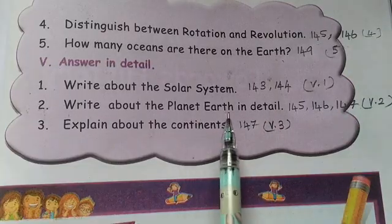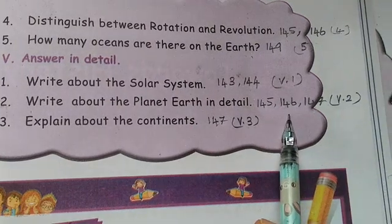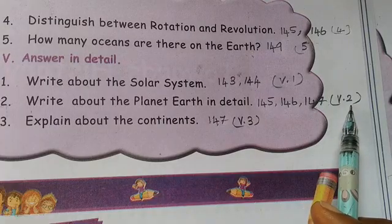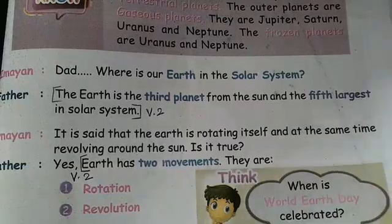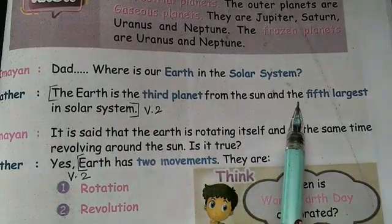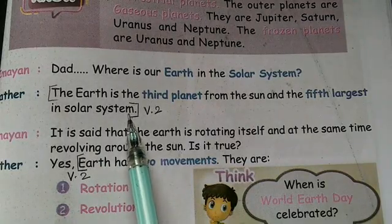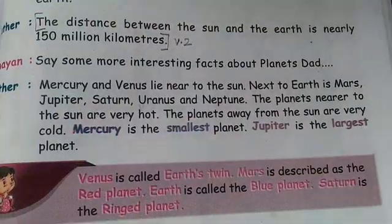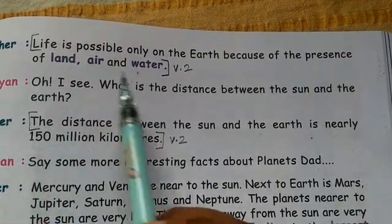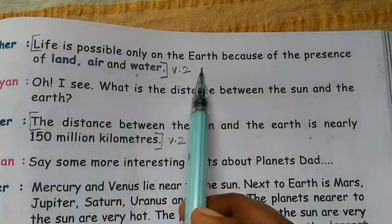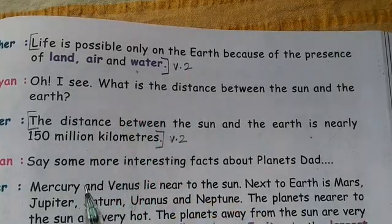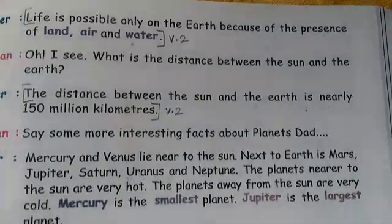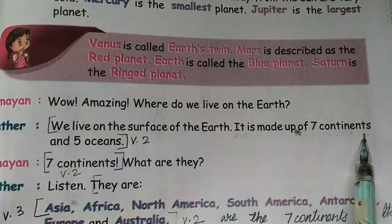Second detailed question: write about the planet Earth in detail - pages 145, 146, and 147. First point: the Earth is the third planet from the Sun and the fifth largest in the solar system. Life is possible only on the Earth because of the presence of land and water. The distance between the Sun and the Earth is nearly 150 million kilometers. We live on the surface of the Earth.